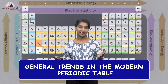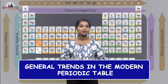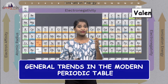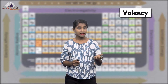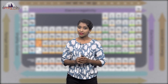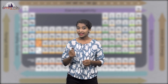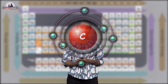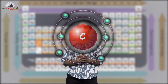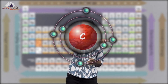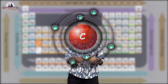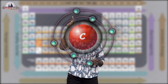General trends in the modern periodic table. Valency: the valency of an element is determined by the number of valence electrons present in the outermost shell of its atom.